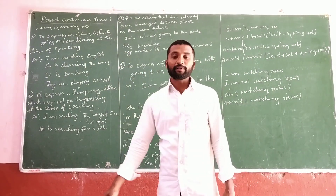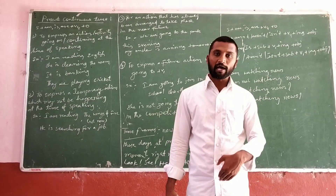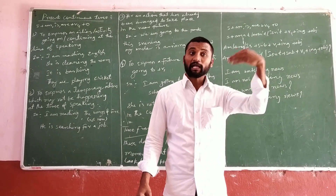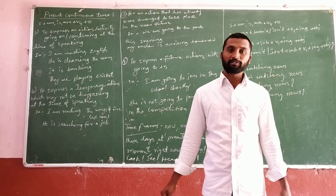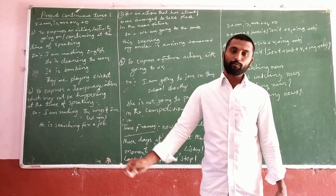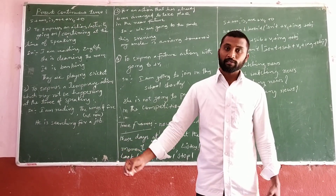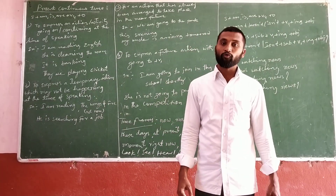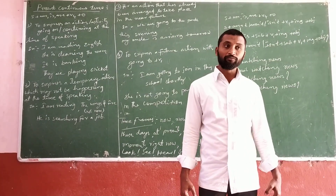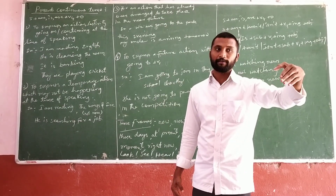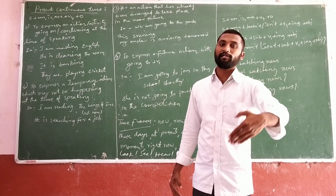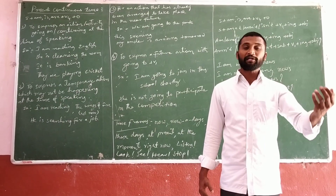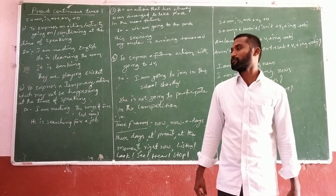For example: 'I am reading English.' Someone came to our class and asked what I was doing — I said 'I am reading English.' At the time of speaking, my action is in a continuous process. Another example: 'She is cleaning the room.' When I entered into the room, she is cleaning the room — her activity is in continuous form, so we use present continuous tense.